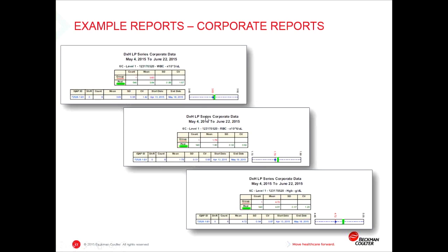The next format to consider is our corporate reports. The corporate reports are for multi-site facilities that may be running multiple versions of or multiple systems that are all the same. This allows you to compare the different laboratories within your network. In the standard reports, when you compare to the pool, it's more of a randomly assigned group that's a function of the lot control. With the corporate reports, you're really comparing head-to-head against different labs in your network.